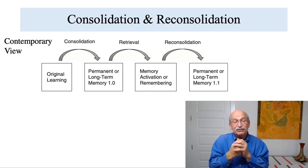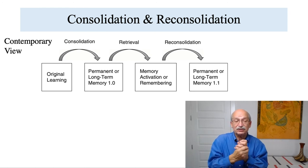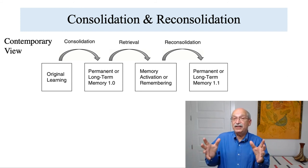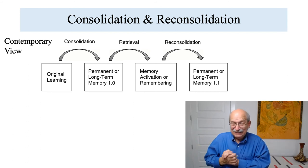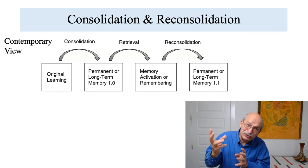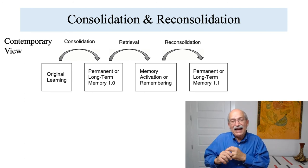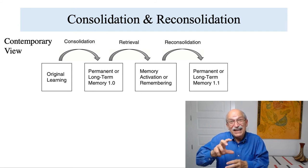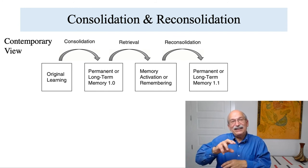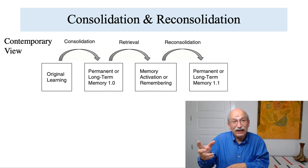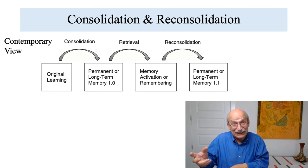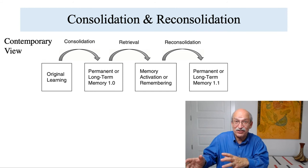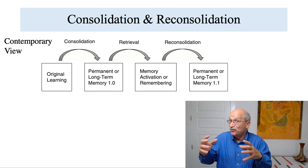So the contemporary view starts out the same as the original traditional view. Original learning has to be consolidated, and that forms the permanent or long-term memory — referred to here as 1.0. When you remember that information, you retrieve that into an active state. And once a memory has been reactivated, it can become reconsolidated. This reconsolidation can incorporate new informational elements into the memory, such that the long-term memory is no longer version 1.0, but it's now version 1.1.